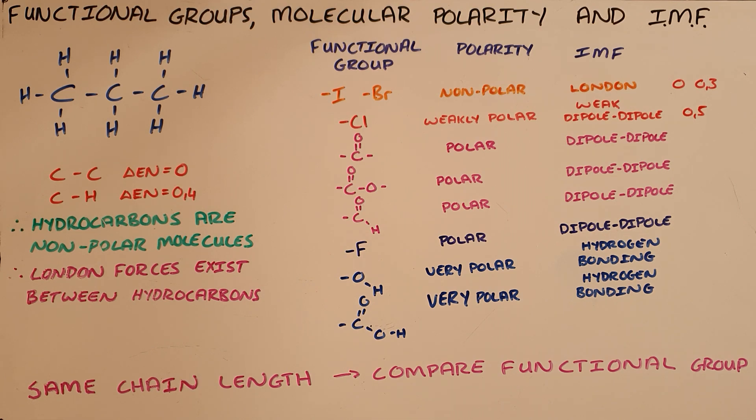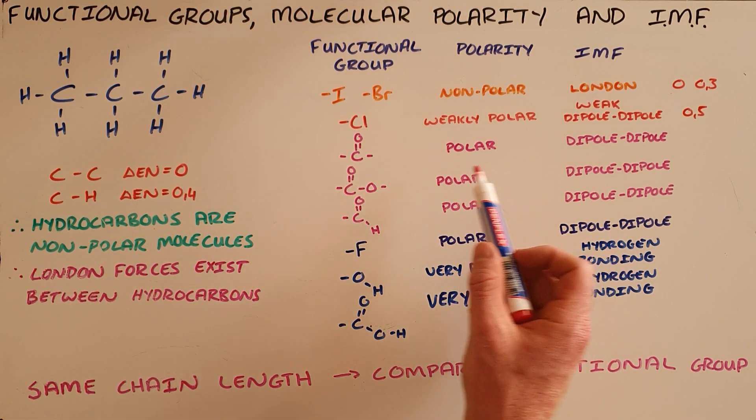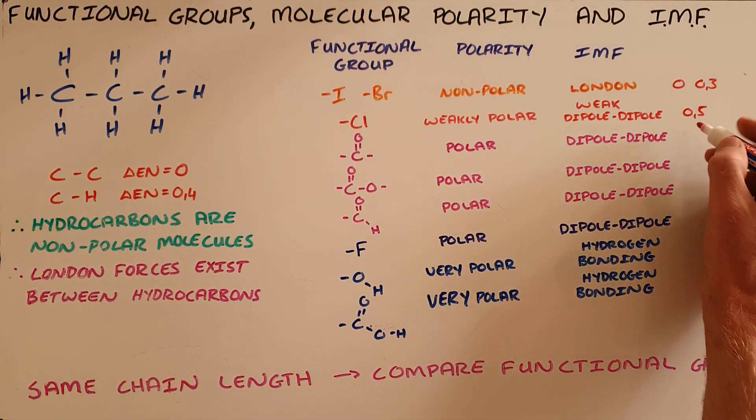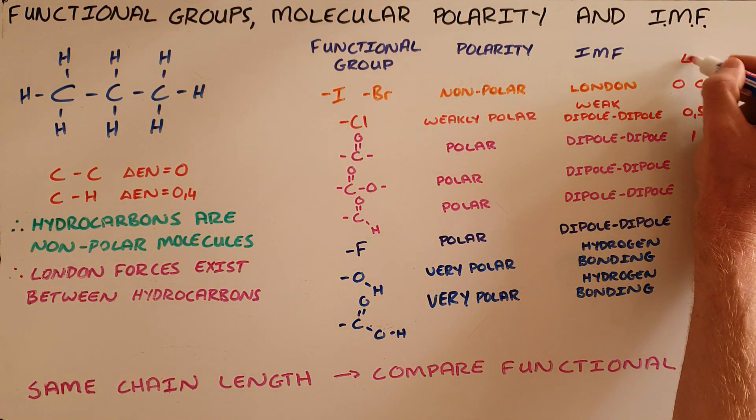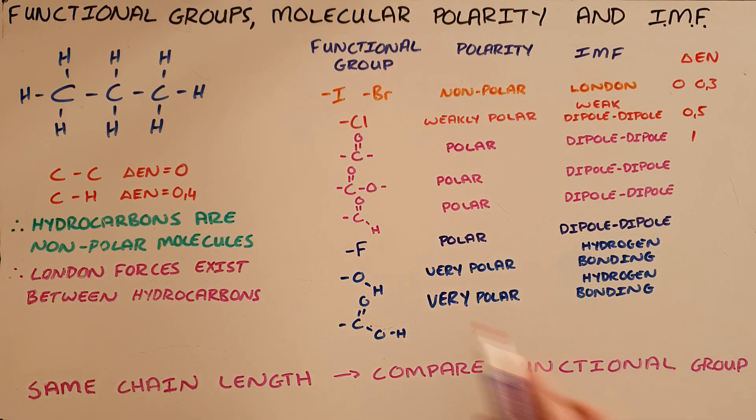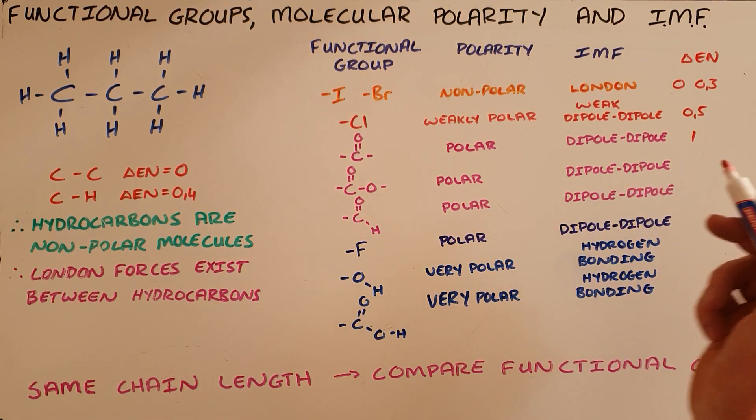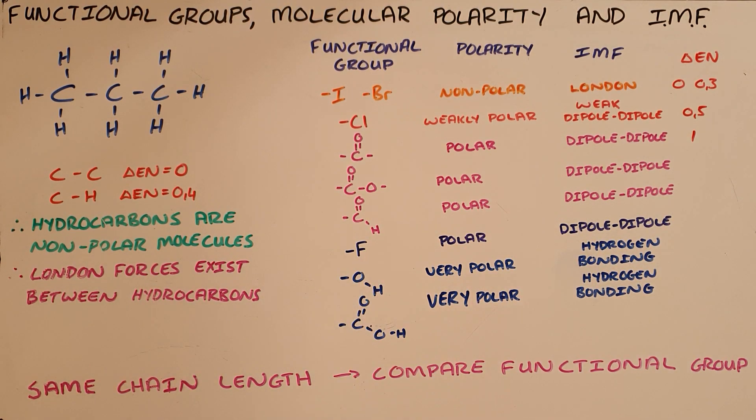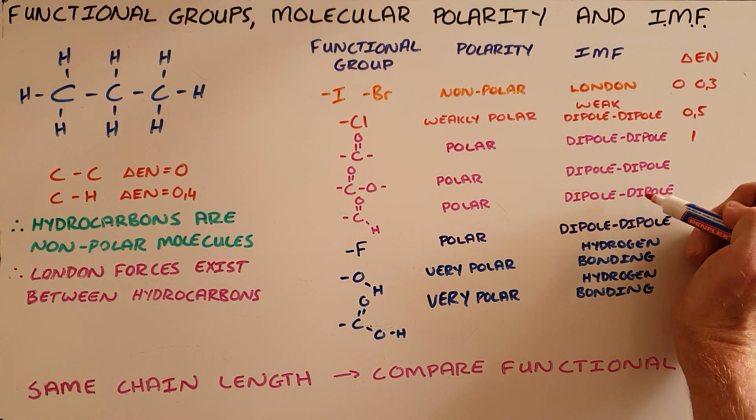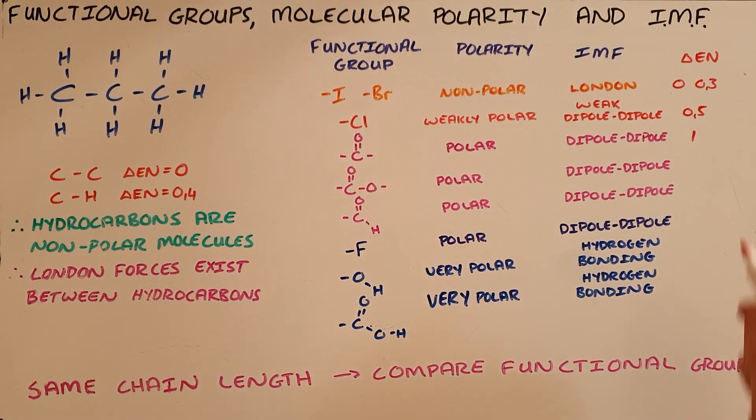The next functional group that we look at is the carbonyl group that makes our ketones. Because of the carbon-oxygen bond, which has an electronegativity difference of 1, we say that that is a polar molecule, and as a result, there are dipole-dipole forces. Next comes the ester group, which is also polar and dipole-dipole forces, followed by the formyl group of aldehydes, which is also polar, which gives rise to dipole-dipole forces. It's important to note here that these are arranged in order of increasing polarity, but they are all very, very similar in their polarity.